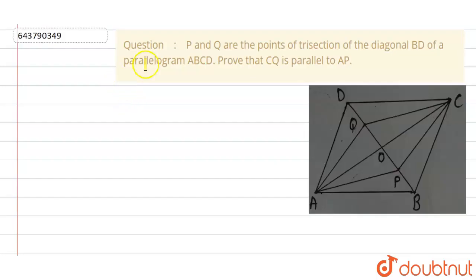Hello friends, today's question is: P and Q are the points of trisection of a diagonal BD of a parallelogram ABCD. Prove that CQ is parallel to AP.